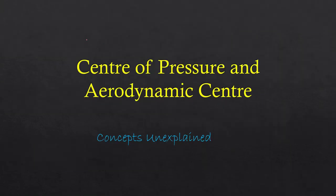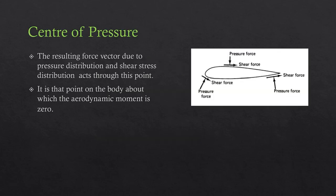Let us try and understand what is center of pressure and aerodynamic center for an aircraft. We know that as the aircraft moves, we have negative pressure at the upper surface of the airfoil and positive pressure at the lower surface. This pressure difference is responsible for the lift of an aircraft. As the aircraft moves, a boundary layer forms on the wing and due to this boundary layer we have shear forces at the surface of the airfoil.